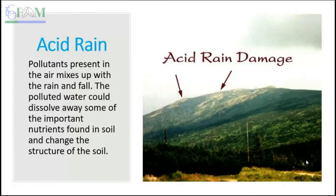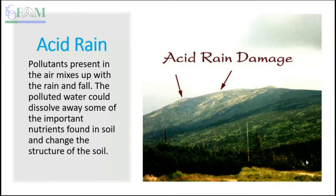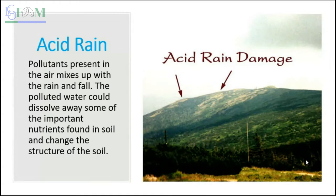The third cause is acid rain. Acid rain is caused by sulfur dioxide and nitrous oxide in the atmosphere — sulfur dioxide from coal burning and nitrous oxide mainly from vehicles. When these pollutants react with rainwater, they travel to the land and change the pH level of the soil.